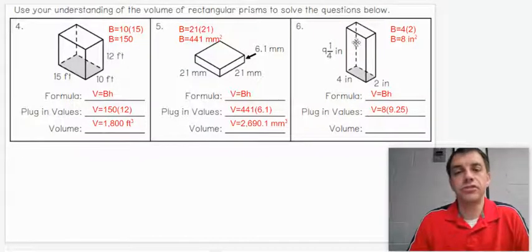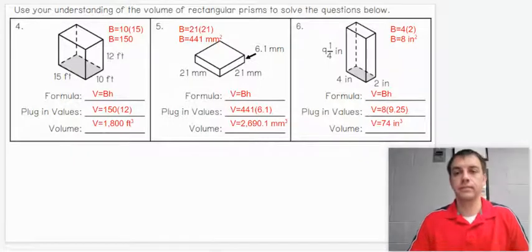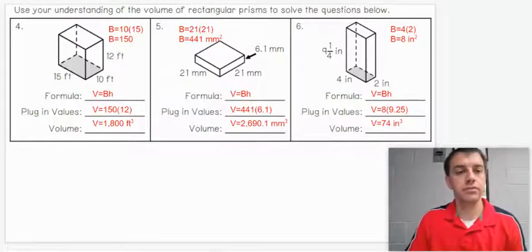Then let's plug that number and our height into the formula. So volume equals 8 times 9.25. I just changed the one-fourth into a decimal. Let's go ahead and answer that. 8 times 9.25 gives us 74 inches squared.